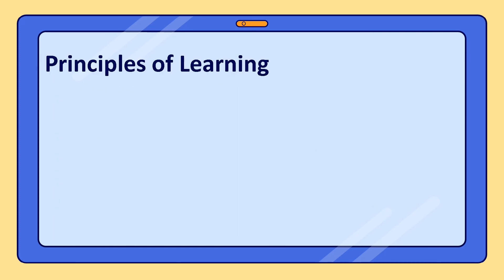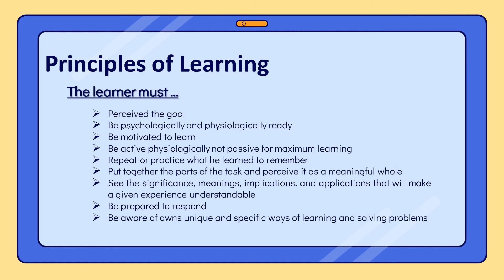In learning, we must follow such principles for we are all learners for a lifetime. As learners, we must: perceive the goal; be psychologically and physiologically ready; be motivated to learn; be active, not passive, for maximum learning; repeat or practice what we learn to remember; put together the parts of the task and perceive it as a meaningful whole; and see the significance, meanings, implications, and applications that will make a given experience understandable.